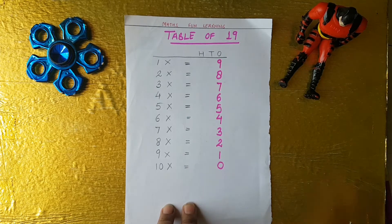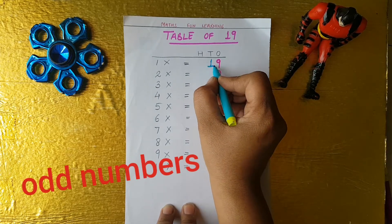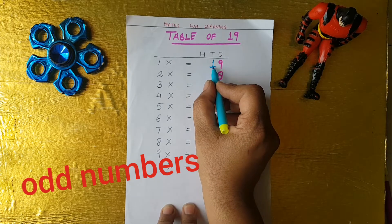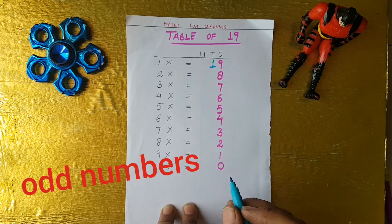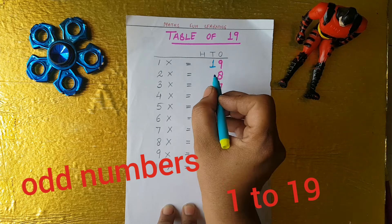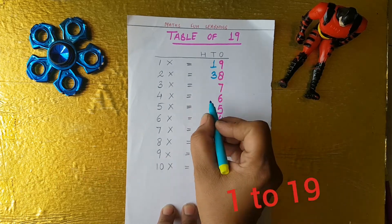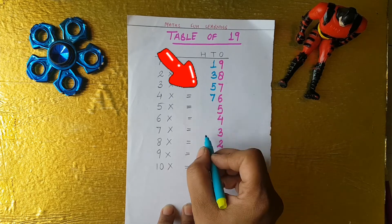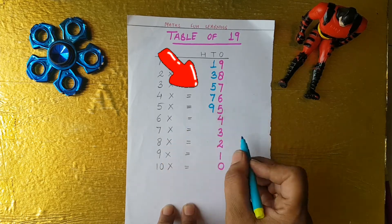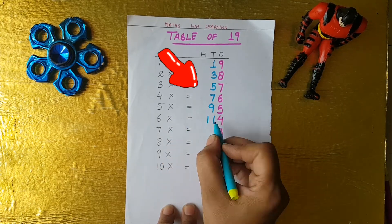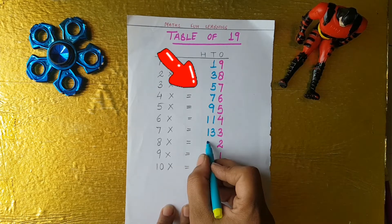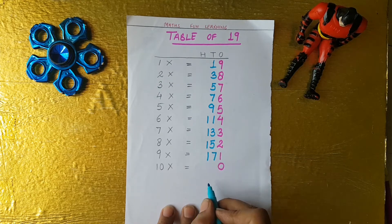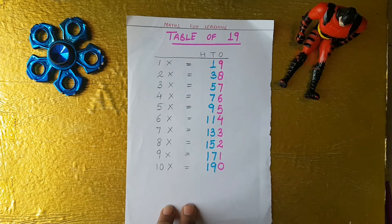Odd numbers — you already know about odd numbers. So, starting from 1 to 19, you have to write all the odd numbers: 1, 3, 5, 7, 9, 11, 13, 15, 17, 19.